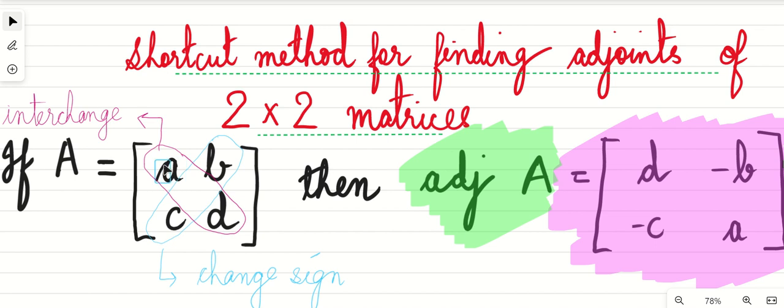These two elements, a and d, will be interchanged. In position of a, d will come, and in position of d, a will come in the adjoint of A. Look here - you can see in place of a, d came, and in place of d, a has come.